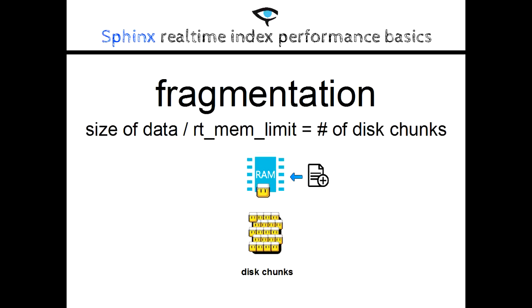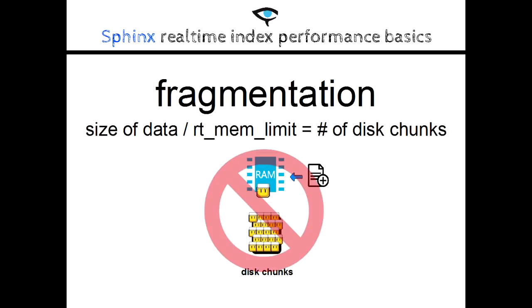The value of RT-MEMLimit and the size of your data set will determine how many disk chunks are created. When the index becomes highly fragmented across many disk chunks, performance suffers. To make this clear, we performed some tests.